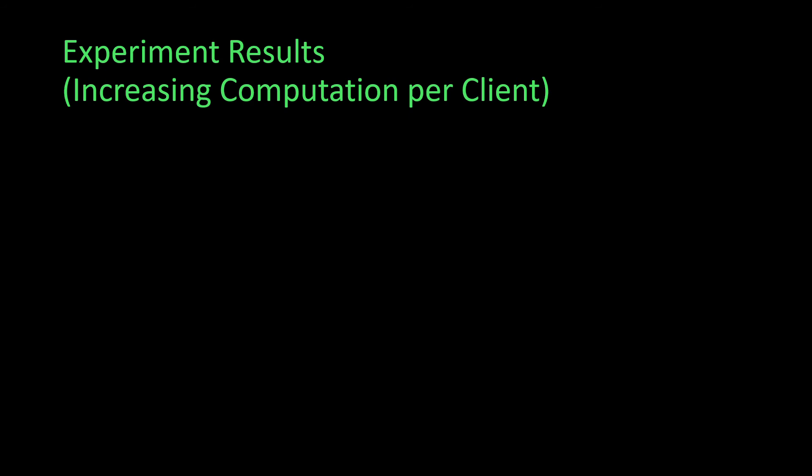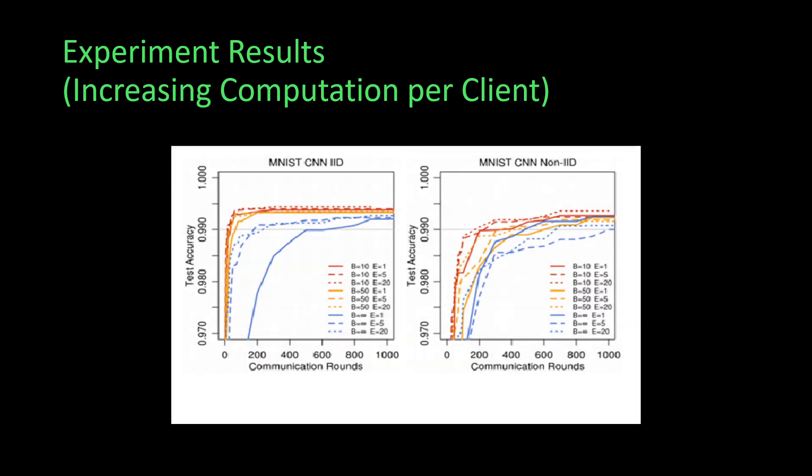We can see once more that increasing E and decreasing B lets the model converge the fastest. The more reddish the color of the curve, the more quickly the model converges by increasing E and decreasing B. Here is the demo of our project.